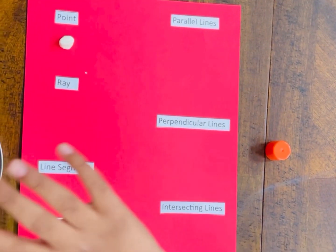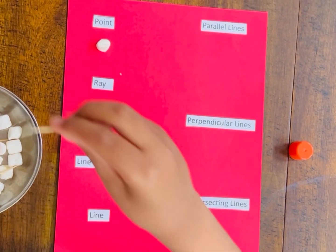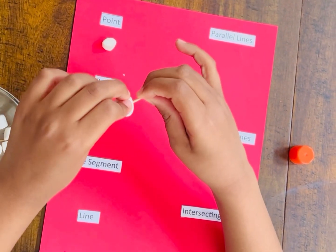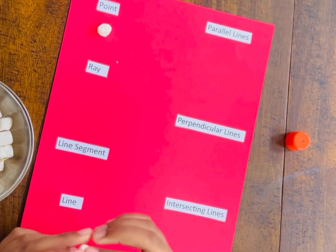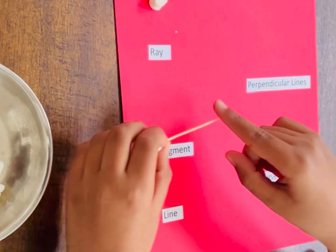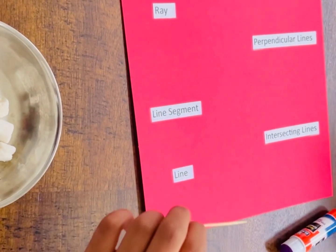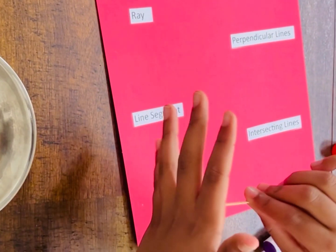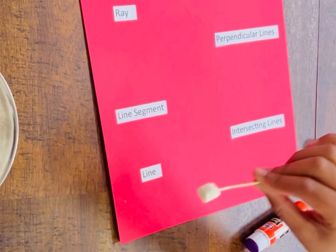Next, it's going to be a ray. For a ray, we're going to be putting a marshmallow and a toothpick. A toothpick is going to be our line. The front of the line will never end. This line will keep on going, but because there's a dot here, this line will not keep on going.